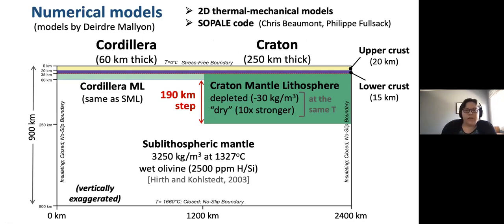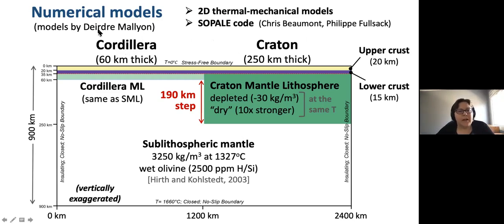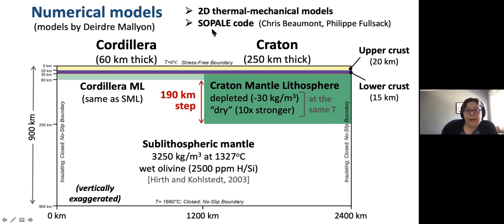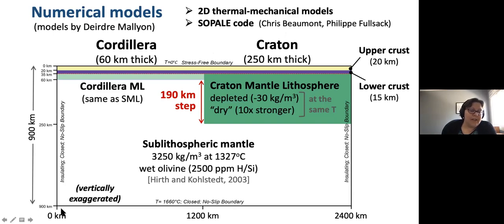For the next few slides, I'd like to show some numerical models that we've done to actually understand the dynamics of the mantle at the lithosphere step. These models were done by Deirdre Leon as part of her master's thesis at the University of Alberta. The models are two-dimensional, solving for the thermal and mechanical evolution of our lithosphere-mantle system, using the SOPAL code, which is a finite element code from Dalhousie Geodynamics Group, from Chris Beaumont, Philippe Filsack, and others. The model domain is 900 kilometers in height and 2,400 kilometers in width.